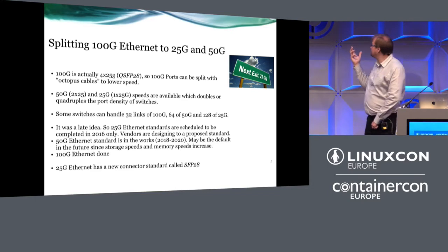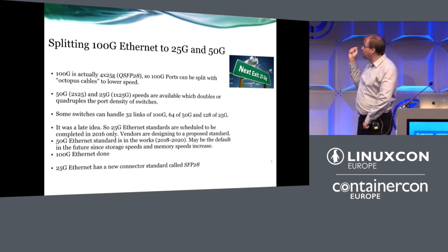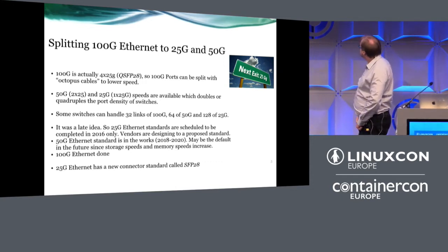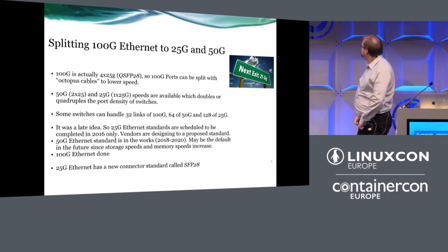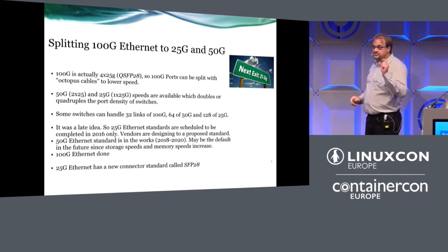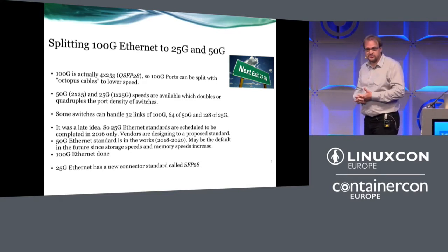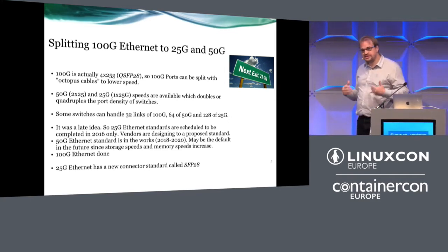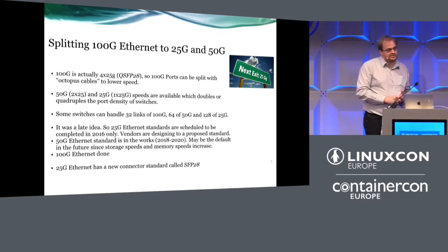The vendors got ahead with this before the standards were completed — the 25G standard was finally completed this year. The 50G standard is probably complete by 2020 and may be the default in the future as storage speed and memory increase. The QSFP28 connector with four strands was also dumbed down to a single strand, giving rise to the new SFP28 transceiver, which looks the same as old SFP connectors but has more rate on the wire. All of this allows an easy upgrade path from existing 10G deployments to 25G or 100G.